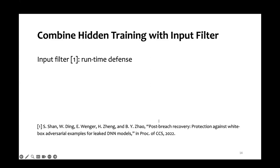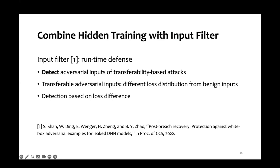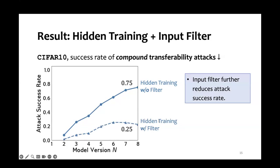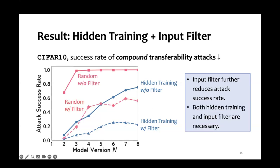Now here comes in a runtime defense. We introduce an input filter, which was proposed in one of our previous work. The input filter is able to detect adversary inputs based on the loss difference from the benign inputs. We've already seen that hidden training, although very improved over other techniques, still has an over 75% attack success rate on the 8th model. Let's see what happens when we combine hidden training with the input filter. Combining them, we achieve a less than 25% attack success rate on the 8th model. But now let's look at what if we combine input filter with randomly selecting hidden data. This shows that both hidden training and the input filter are necessary for robustness against compound transferability attacks.